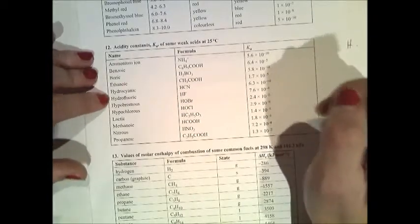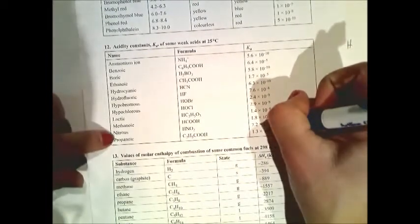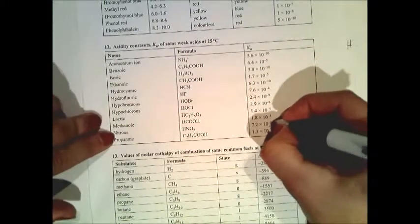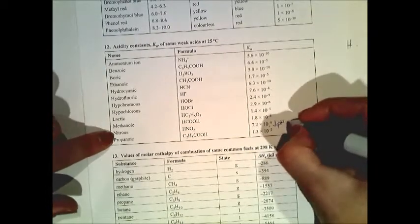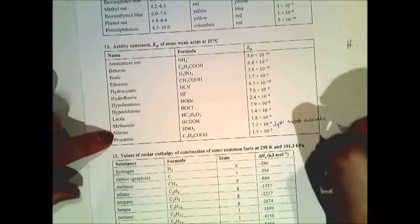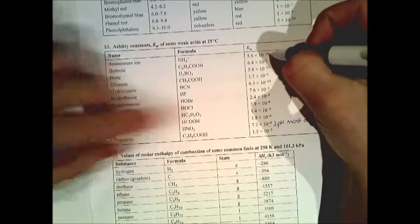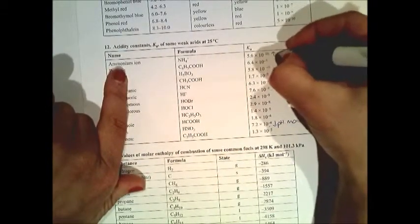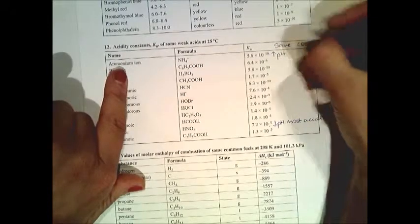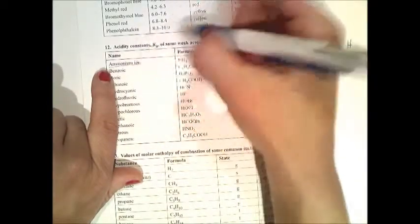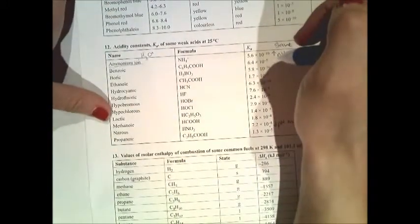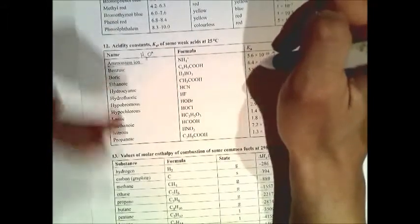Looking at a table of Ka values: nitrous acid has the highest Ka so it would be most acidic and give us the lowest pH. Ammonium ion has the smallest Ka — 5.6 times 10 to the negative 10 — so it would give the highest pH at the same concentration. If you increase the concentration of ammonium you'd have more moles per litre and maybe more H3O+, but at same concentration it's easy to compare: high Ka means lower pH, more acidic.